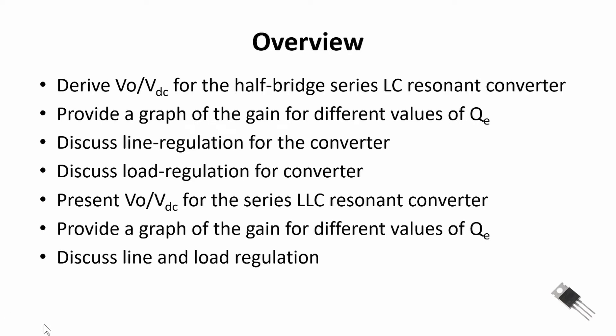Here's an overview of the video. First I'm going to derive the input-output equation for the half bridge series LC resonant converter. Then we'll provide a graph of the gain for different values of the quality factor Q sub E. We'll discuss line regulation for the converter — where the input DC voltage V sub DC varies and we try to maintain a constant output voltage. We'll need to adjust the switching frequency of the DC to AC inverter on the front end of the converter to account for that change.